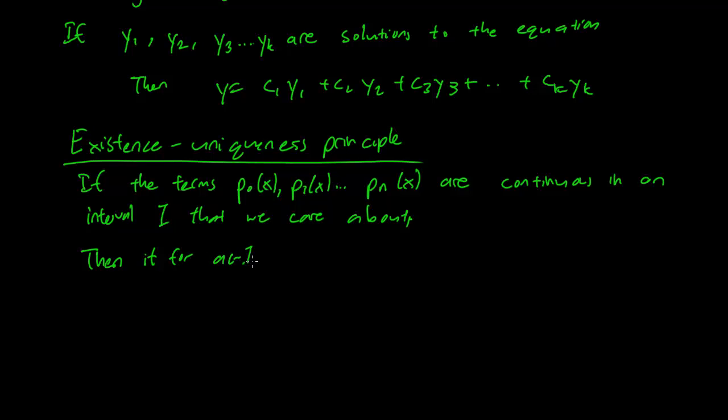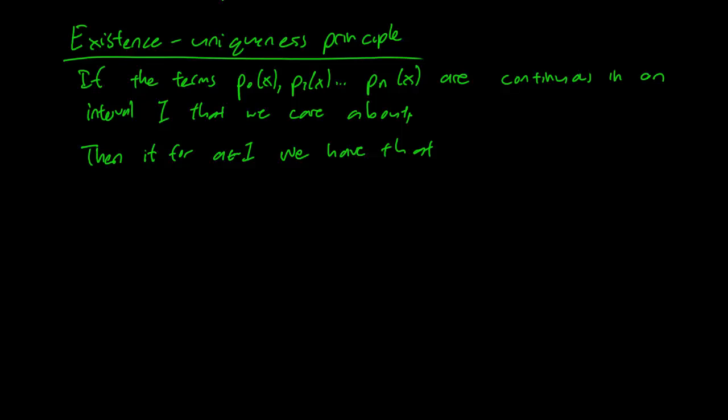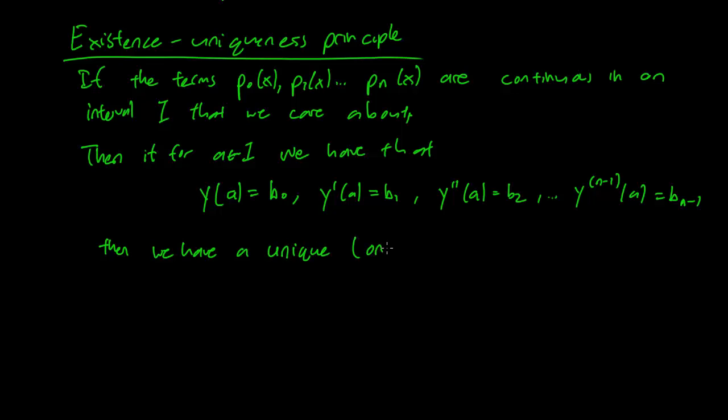Then if for a in I, we have that, so remember for linear equations you only needed one bit of information, and for second order equations you needed two pieces of information about the function and the derivative. It shouldn't surprise you that for n degree equations, we need n pieces of information. y(a) equals b0, y'(a) equals b1, y''(a) equals b2, and so on, y^(n-1)(a) equals b_(n-1). Only if we have n pieces of information, then we have a unique, that is one and only one, solution.